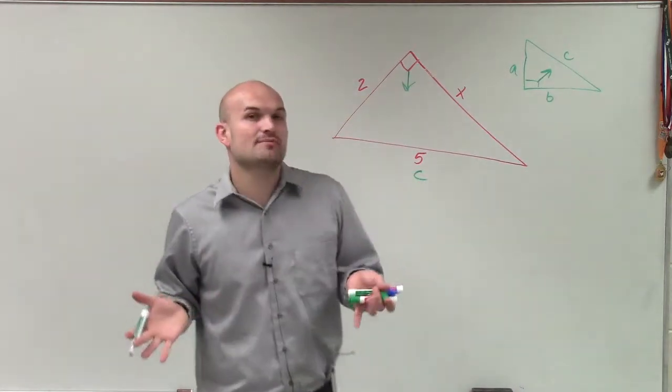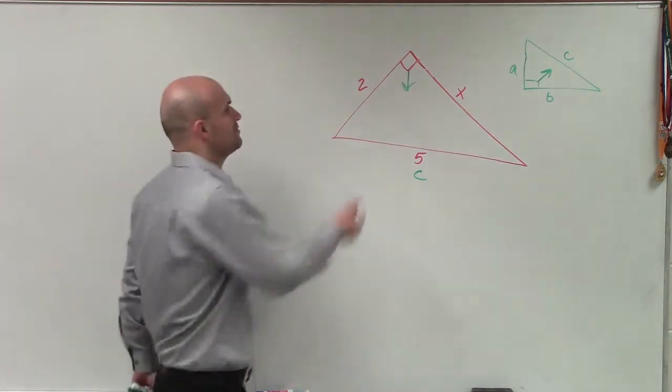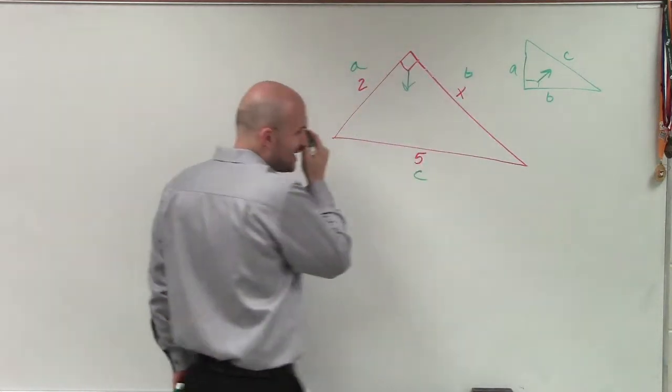Then A and B are just going to be the two legs that connect to make your 90-degree symbol. And therefore, it doesn't matter which one we use for them. So I'll say A will be 2 and B will be x.